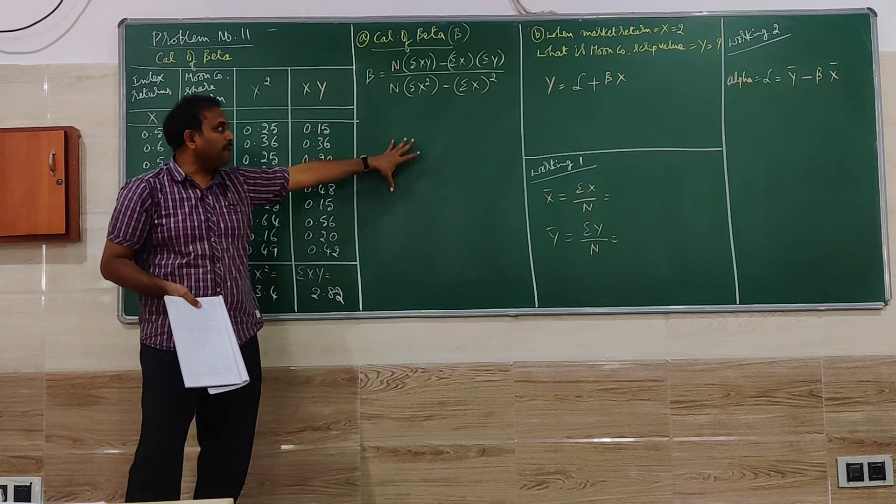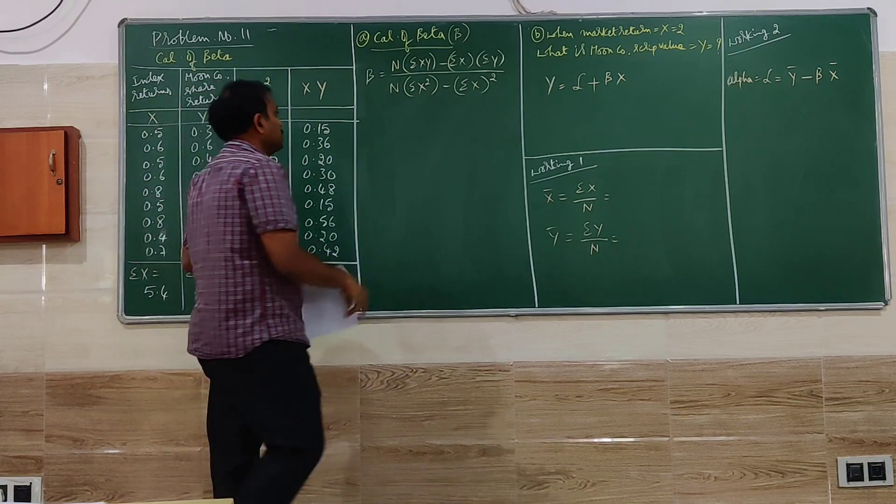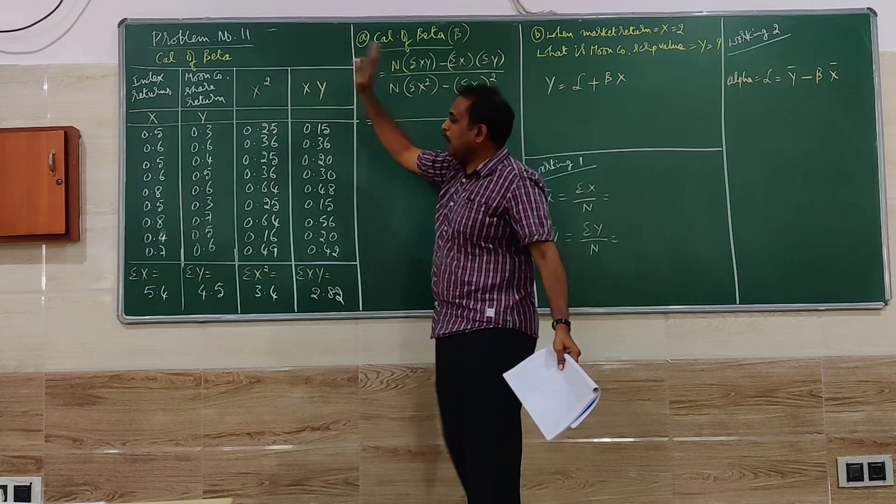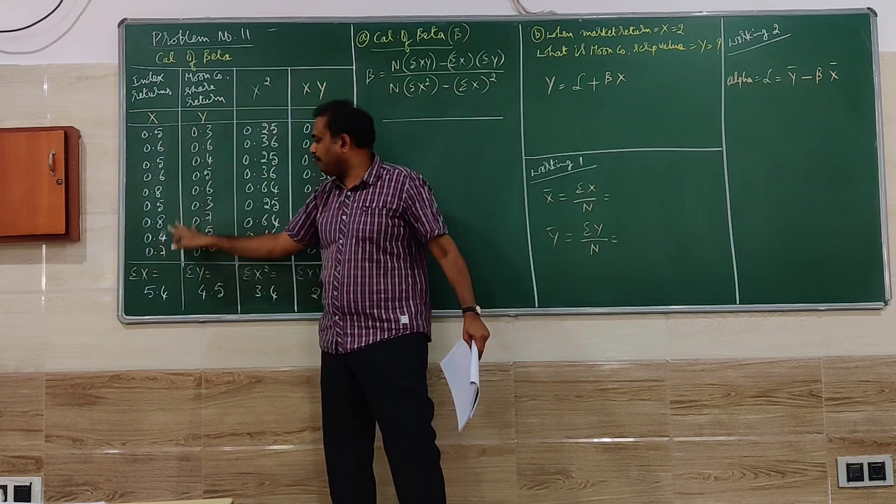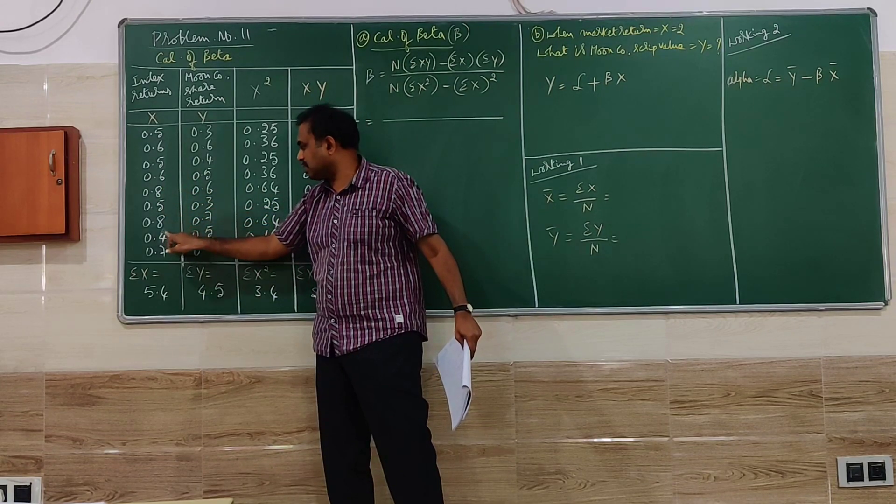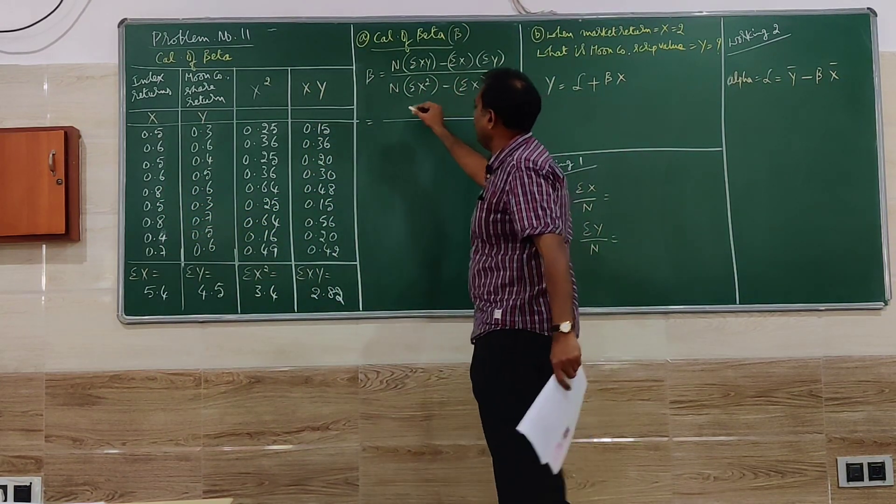Then we have to go for the calculation of beta, the first question. N is the first thing. How to identify N? Number of pairs of data here. 1, 2, 3, 4, 5, 6, 7, 8, 9. So N will be 9.